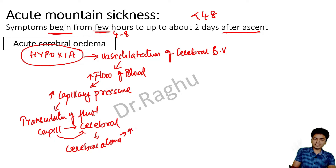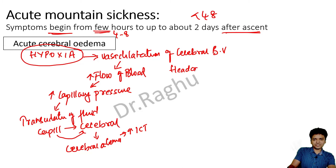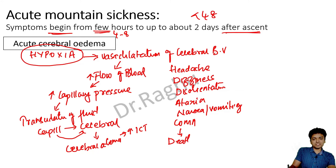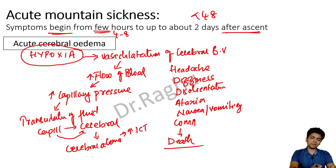Cerebral edema causes an increase in intracranial tension. The features include headache, dizziness, disorientation, ataxia, nausea, and vomiting. If it becomes very severe, it can result in coma and sometimes death. This is the pathophysiology behind acute cerebral edema, which is a component of acute mountain sickness.